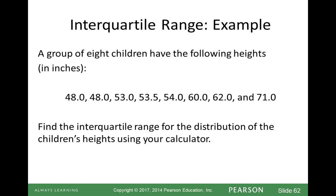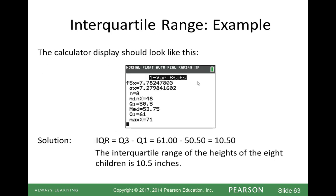Here is an example with our group of eight children where we want to find the interquartile range. We put the data into our calculator, run one variable statistics, and it gives us quartile one and quartile three. Subtracting those, our interquartile range is 10.5.